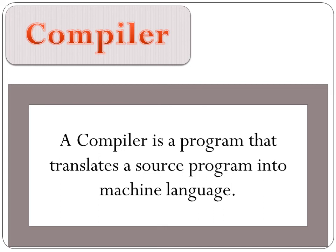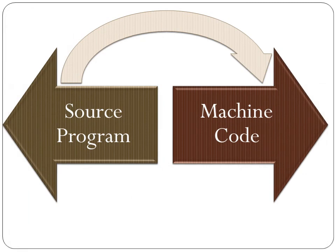A program written as a source program can be translated into machine code, or in the form of 0 and 1, by using a translator which is called a compiler. So source programs, or programs written in high level languages, can be translated into machine code by using a translator named as compiler. All programs written in high level languages are translated into machine code, and then the computer can execute these types of programs.